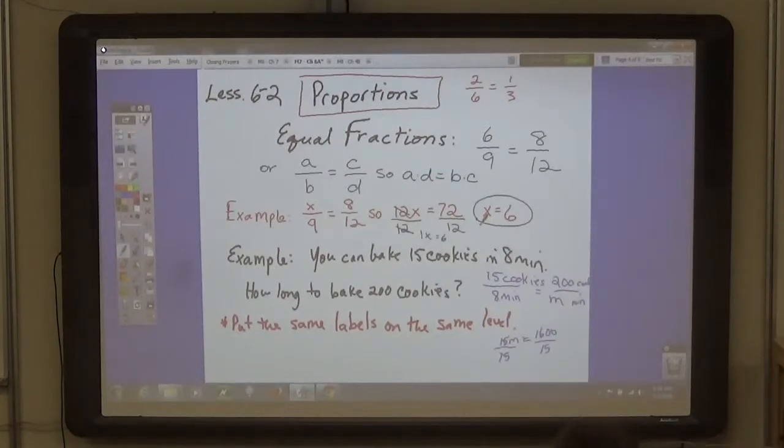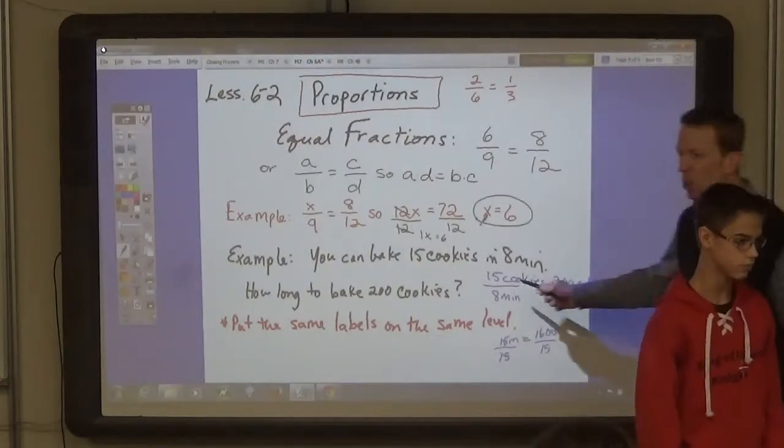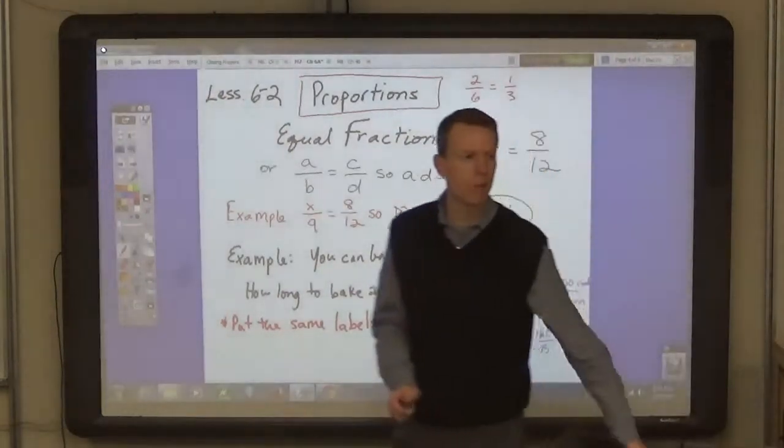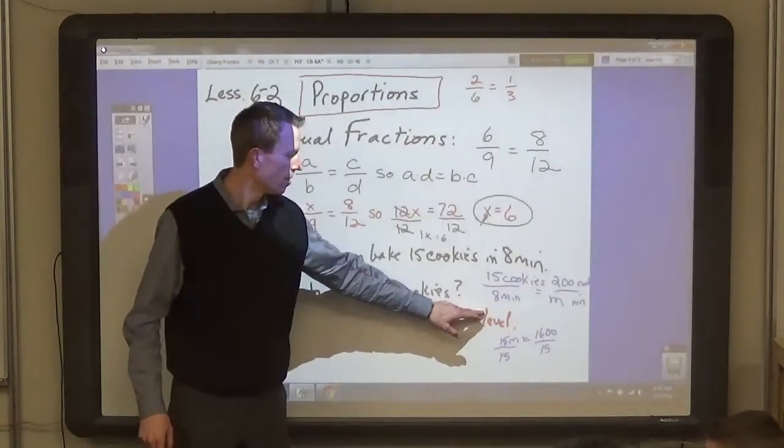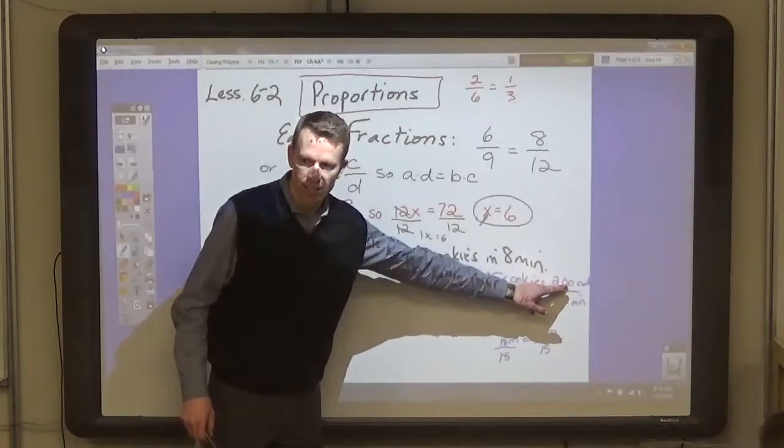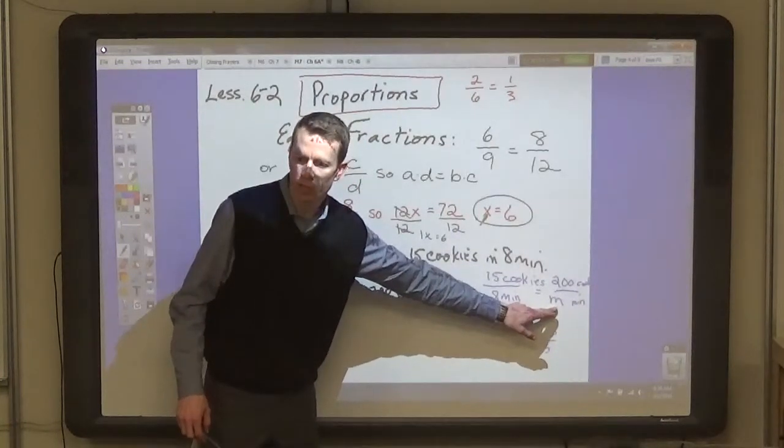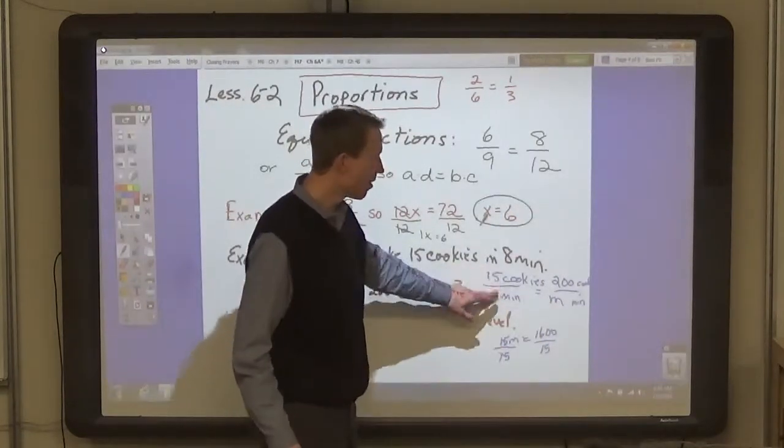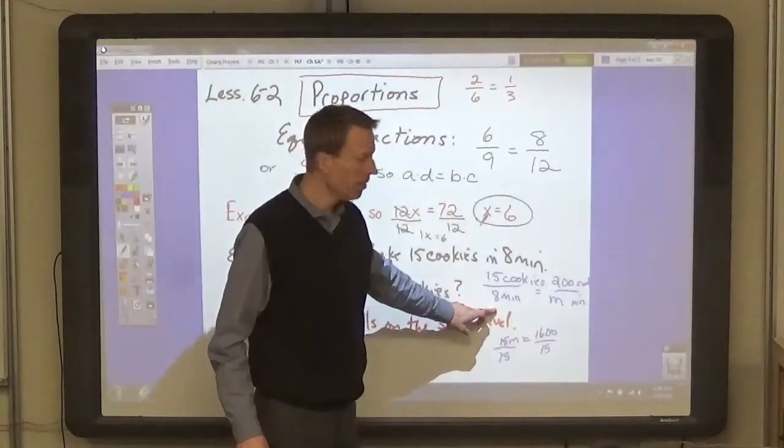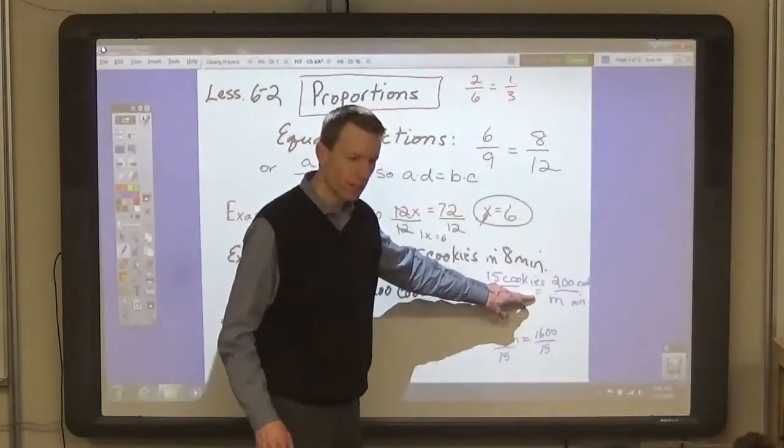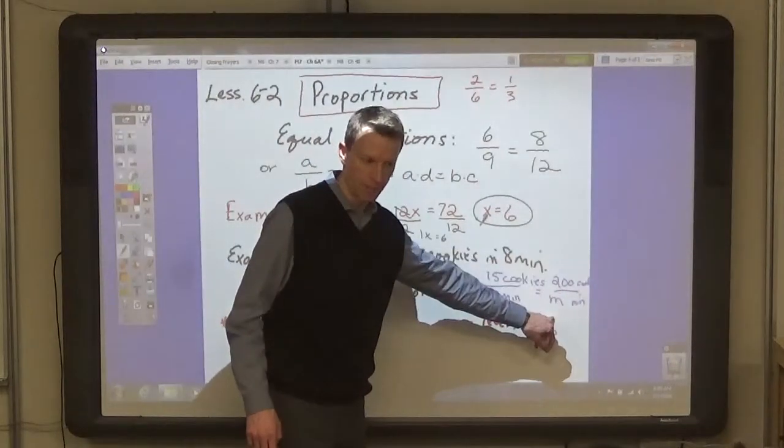You can set this up as a proportion so that the cross products are equal. Come on, guys. So look at these labels. 15 cookies in 8 minutes equals 200 cookies in M minutes. We don't know how many minutes. That's what we're looking for, right? We put the first two as a ratio. 15 to 8 is equal to 200 to M.